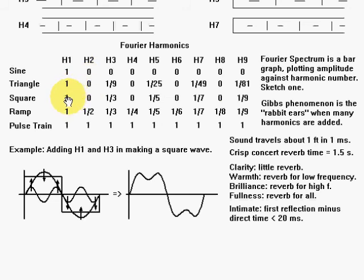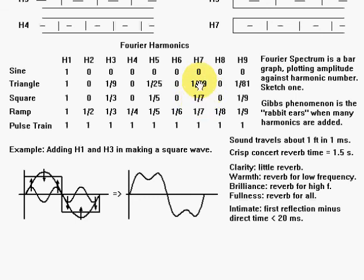One times one is one. Zero times zero is zero. One-third of one-third is one-ninth. Zero times zero is zero. One-fifth squared gives one-twenty-fifth, so you just square the bottom number. One over seven squared is one over forty-nine, and one over nine squared is one over eighty-one. We have memorized an infinite amount of numbers in each case, because these go on forever — five waveforms. That's the review for the Fourier synthesis.